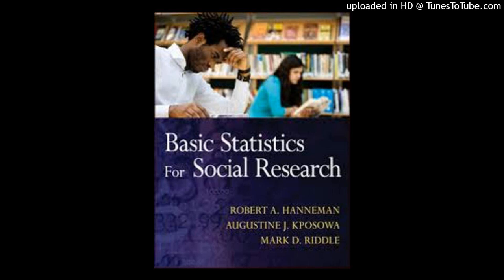A correlation coefficient can range from -1 to +1, where a value of -1 represents a perfect negative correlation, meaning that as the value of one variable increases the other decreases, while a value of +1 represents a perfect positive relationship, meaning that as one variable increases in value so does the other. This signals a perfectly linear relationship between two variables, so that when researchers plot the results on a graph it will make a straight line.